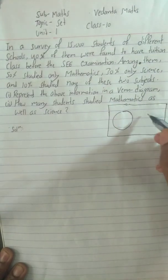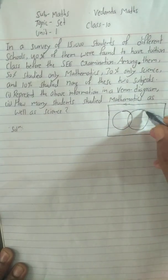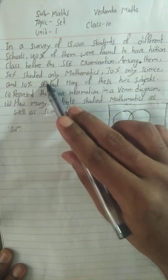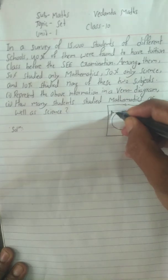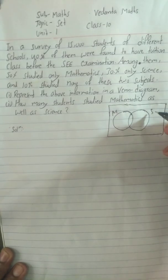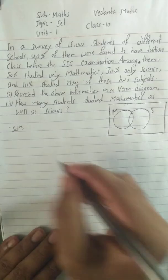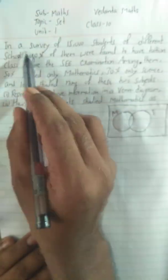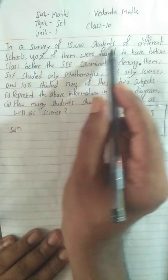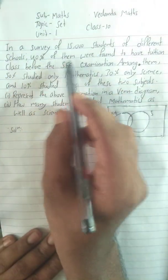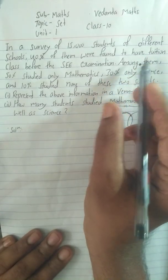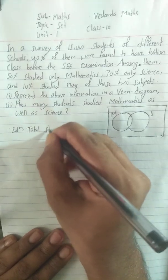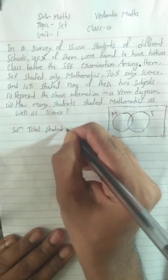Here we draw a space for the Venn diagram so you can clearly view it in this recording. There are two subjects — mathematics (M) and science (S). 50% studied mathematics. Now let's start our solution. In a survey of 15,000 students of different schools, 40% were found to have tuition class.